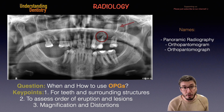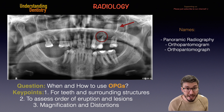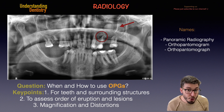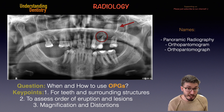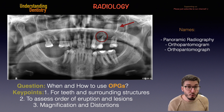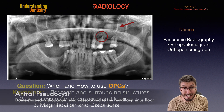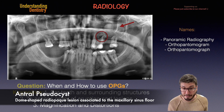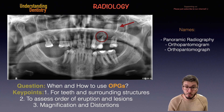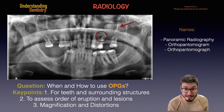We also have this lesion here, which is in the maxillary sinus — a dome-shaped lesion. This lesion can be diagnosed solely using a panoramic radiograph, and it's actually an antropseudocyst. Those were the key points of today to help your studies. See you guys in the next videos.